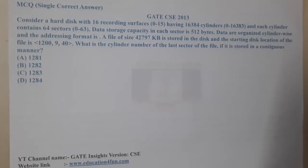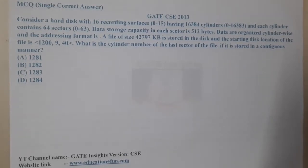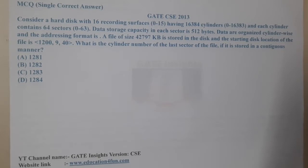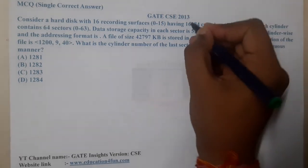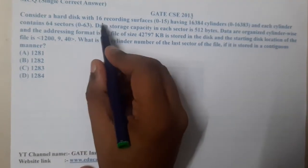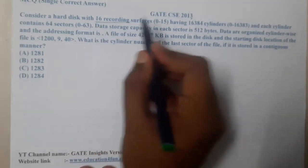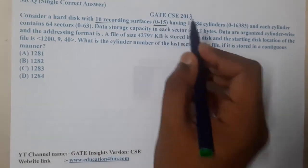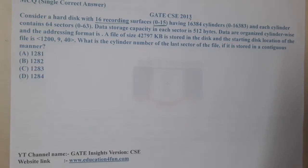Hello guys, we are back with our next lecture. In this lecture let us go through the next question. This question belongs to GATE CSE 2013. Consider a hard disk with 16 surfaces, so they are clearly giving the numbers 0 to 15.